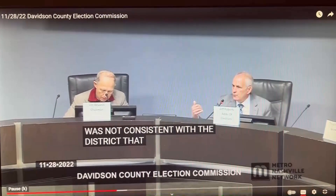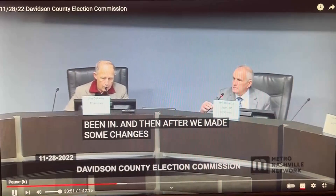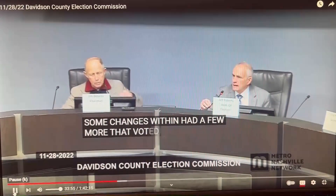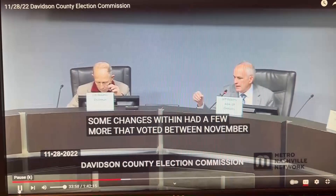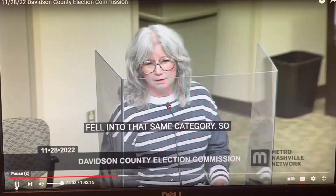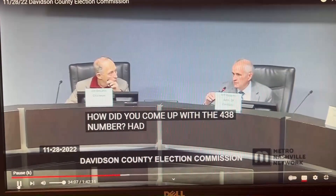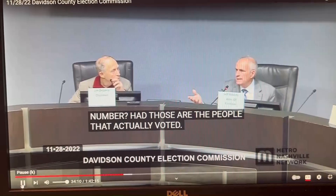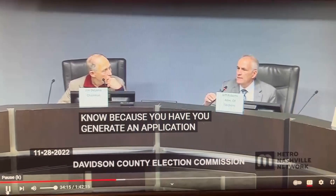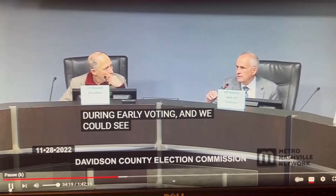After we made some changes, we then had a few more that voted between November 2nd and the 5th that fell into that same category. So how did you come up with the 438 number? Those are the people that actually voted. We know because you generate an application to vote during early voting, and we could see that they were misassigned as far as their district at that point in time.